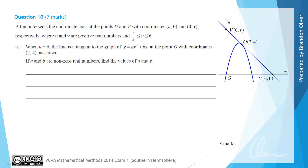For question 10, a line intersects the coordinate axes at the points U and V with coordinates (U, 0) and (0, V) respectively, where U and V are positive real numbers and U is between 5/2 and 6. For part A, when U equals 6, the line is a tangent to the graph of y equals ax² + bx at the point Q with coordinates (2, 4). Given that a and b are non-zero real numbers, find the values of a and b.